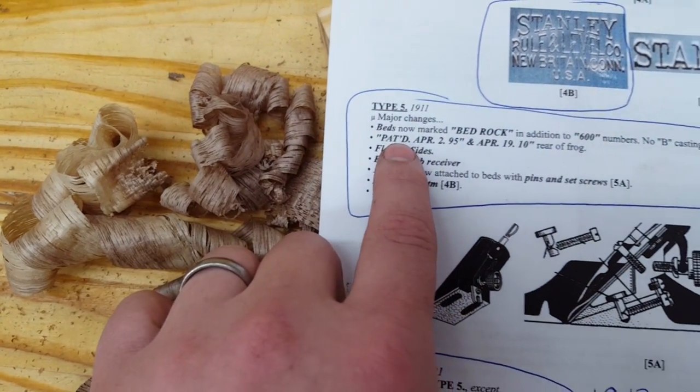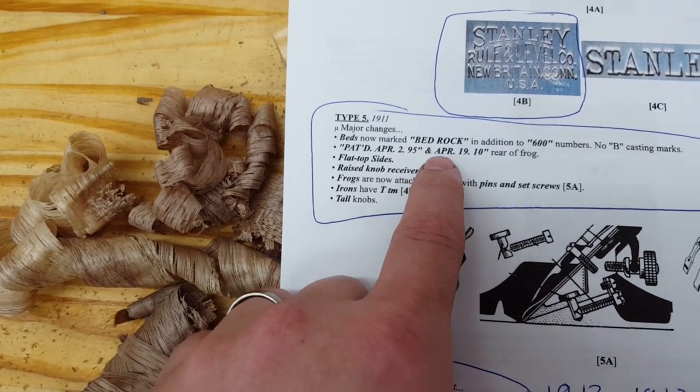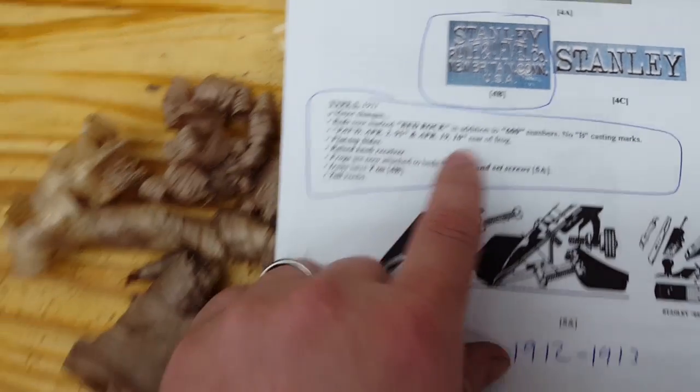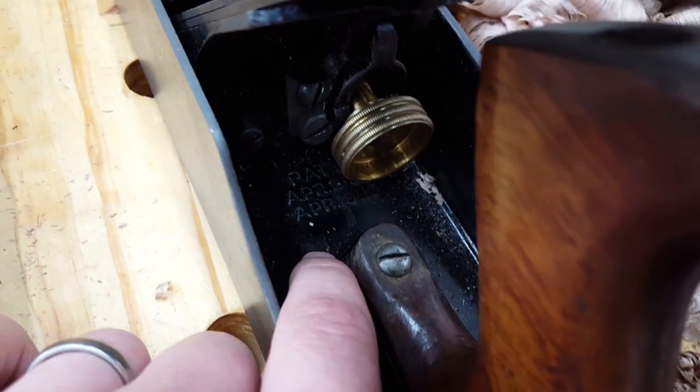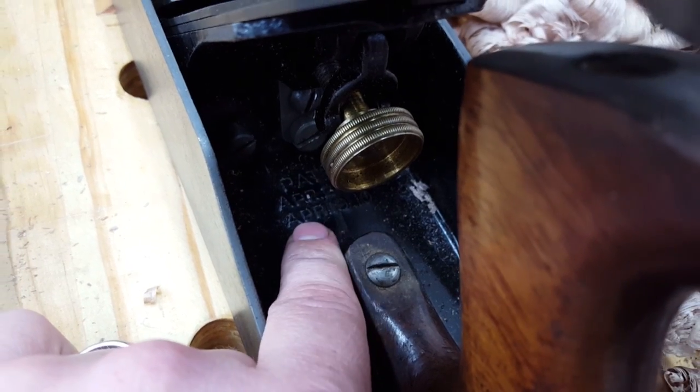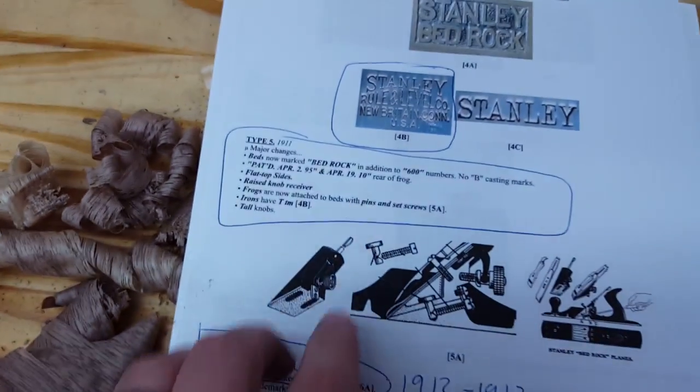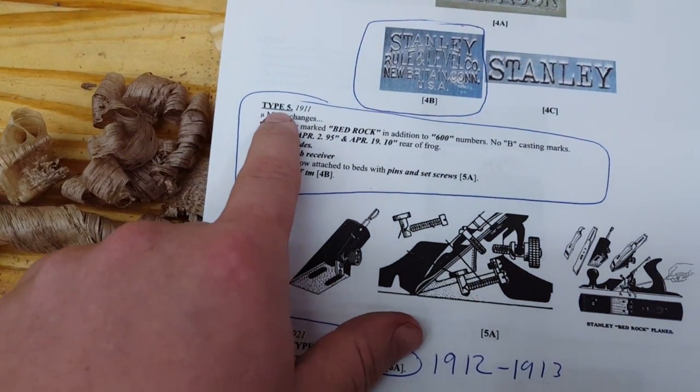This is when the appearance of patent date April 2.95 and April 19.10 rear of the frog. Well I just put it back together and I wonder if it'll show up here, but it does say patent date April 2.95 and April 19.10, it is right there. So everything is current to this type so far.